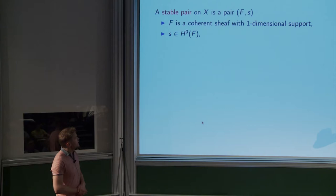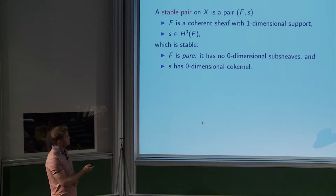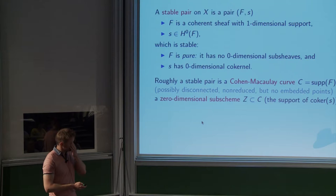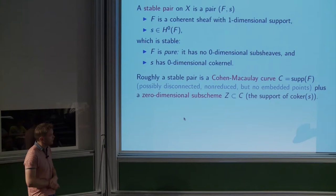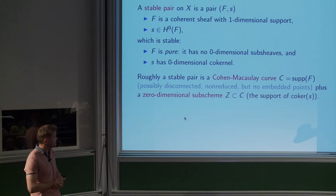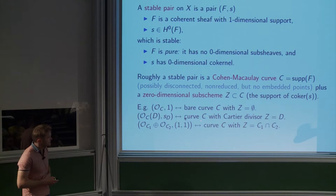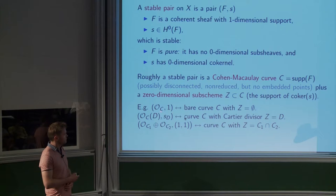A stable pair formally is a coherent sheaf with one-dimensional support and a section satisfying a stability condition: the sheaf is pure — torsion free on its support — and the section has zero-dimensional cokernel. Informally: a stable pair is a pure curve — no embedded points, no points floating around — possibly non-reduced (a thickened curve, but not just at points; if it's non-reduced it must be non-reduced everywhere), and it can be disconnected, together with a zero-dimensional subscheme of that curve.